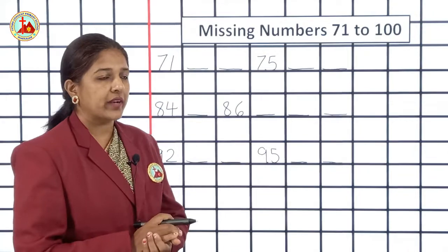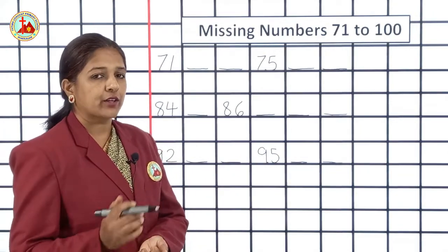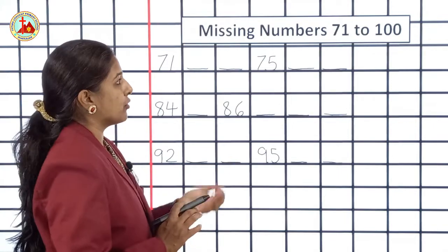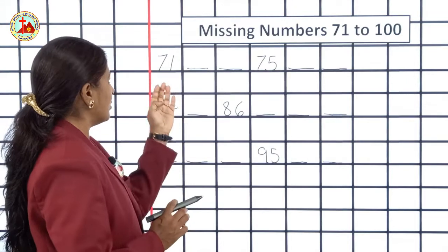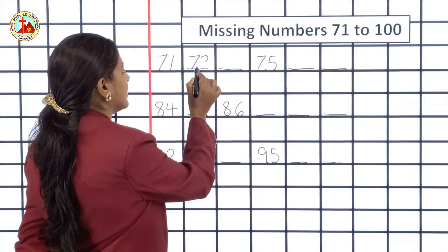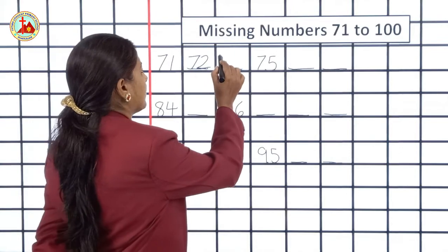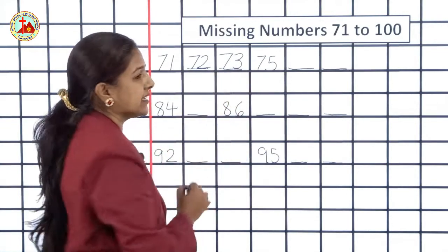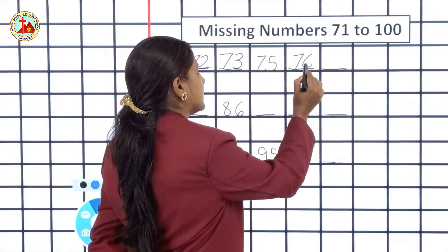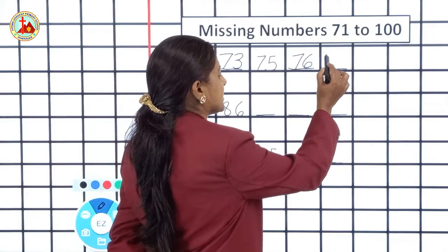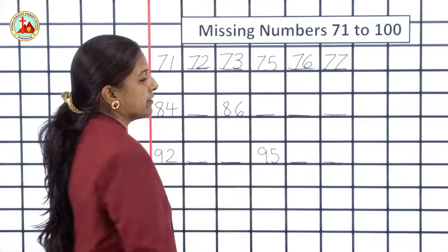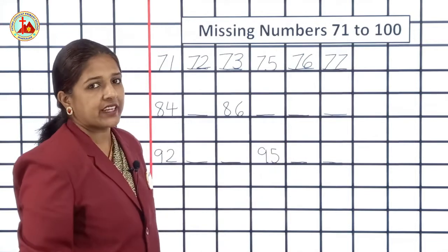Now we will practice writing the missing numbers in your square line book. So take out your square line books. Write the heading first. Here some numbers I have written and some are not written. From 71 to 100, we will practice today. 71 is written, and the next missing number is 72. After 72, the missing number is 73. Next, 75, then 76. After 76, 77. Where the dash is given, you have to fill the missing number.